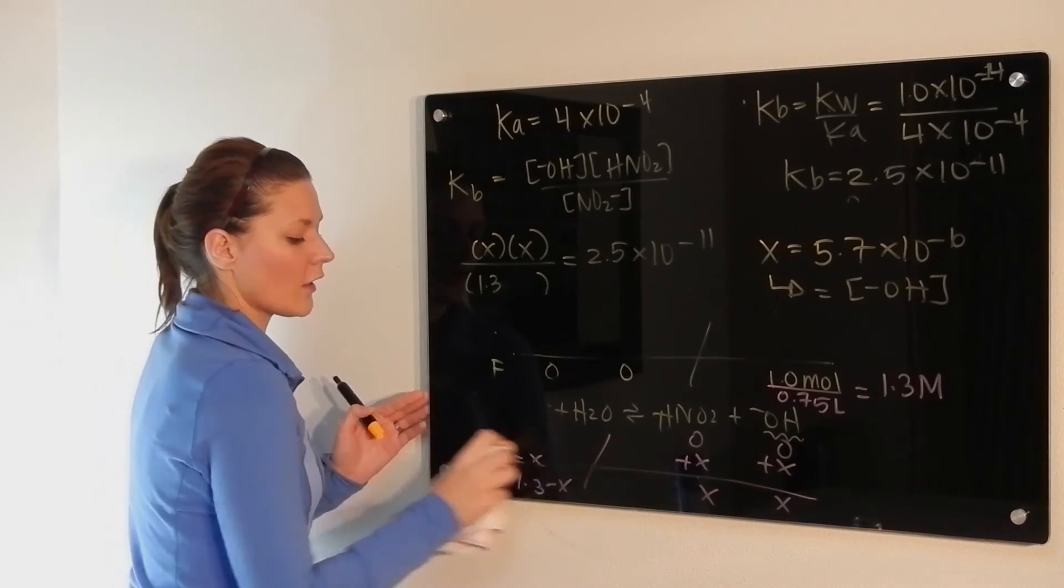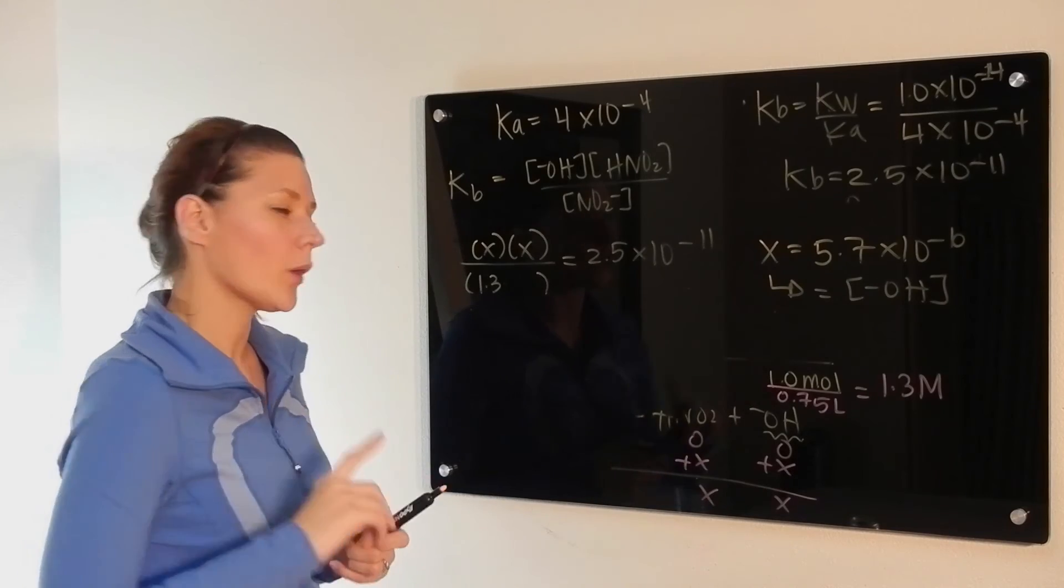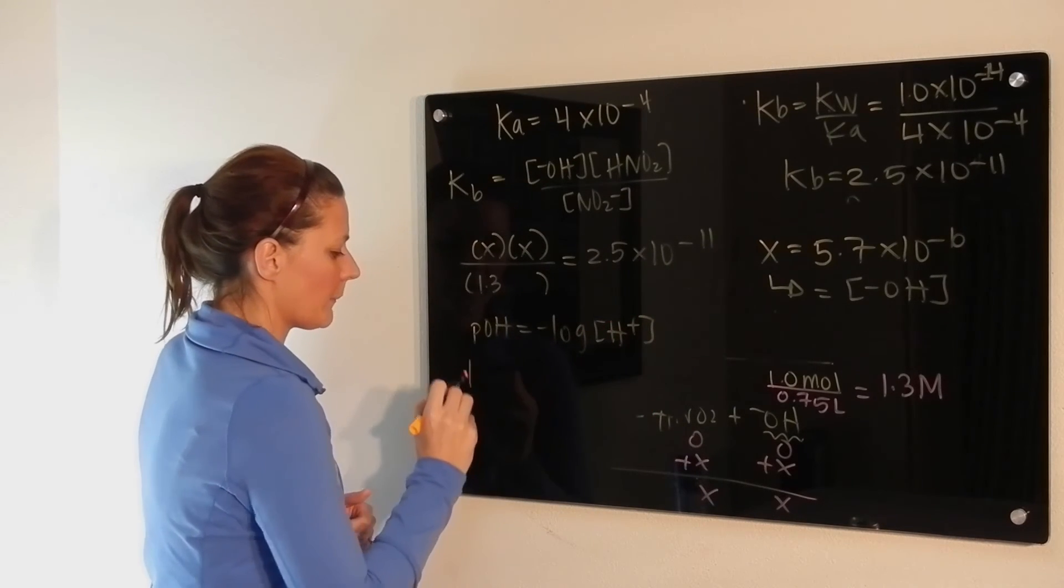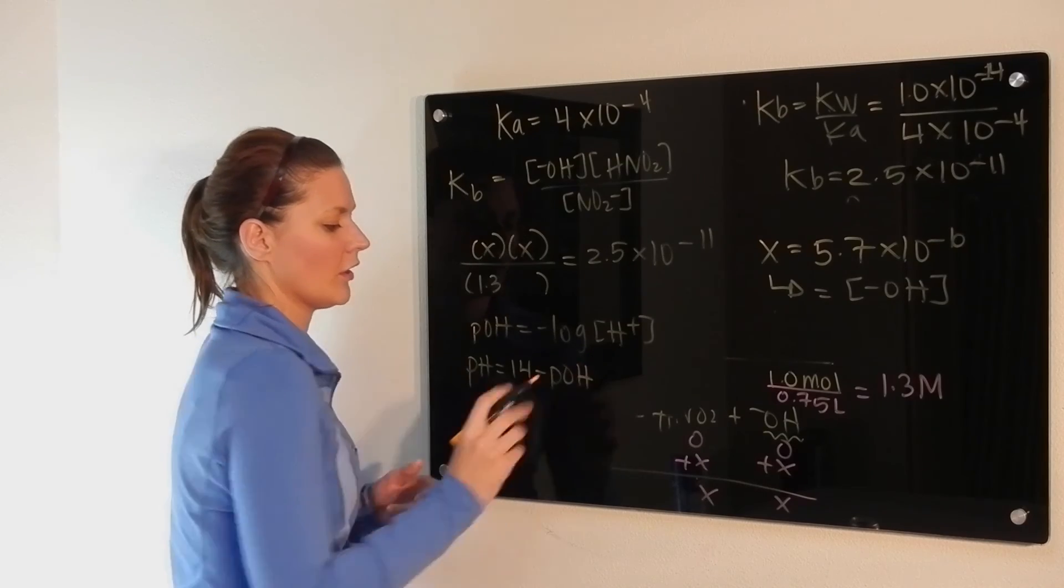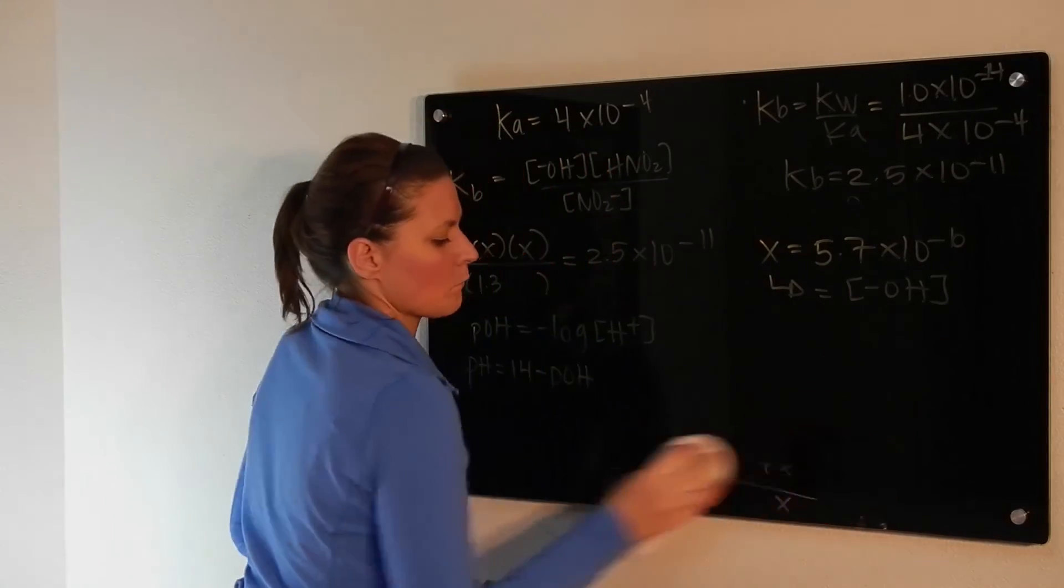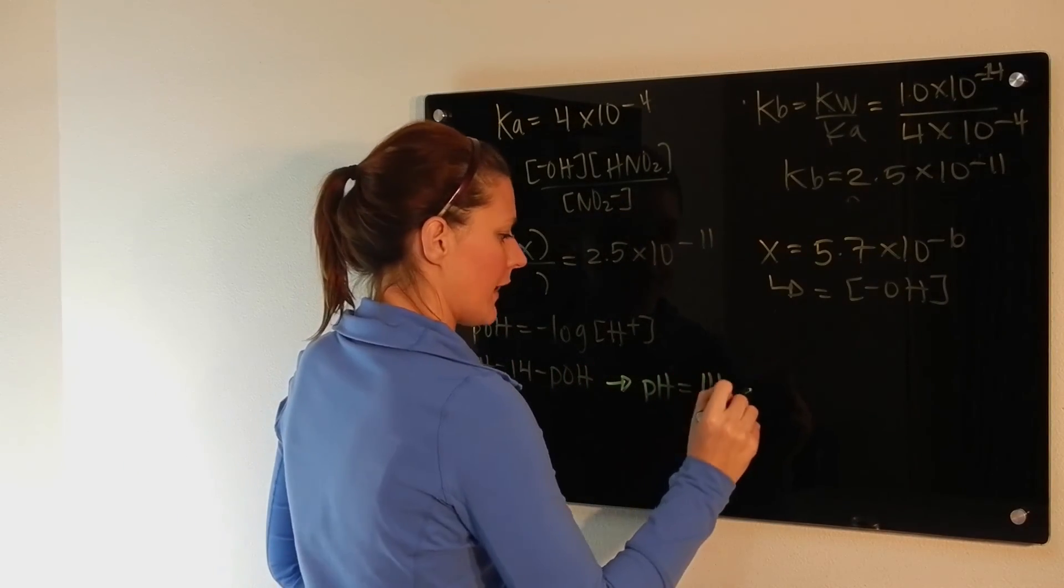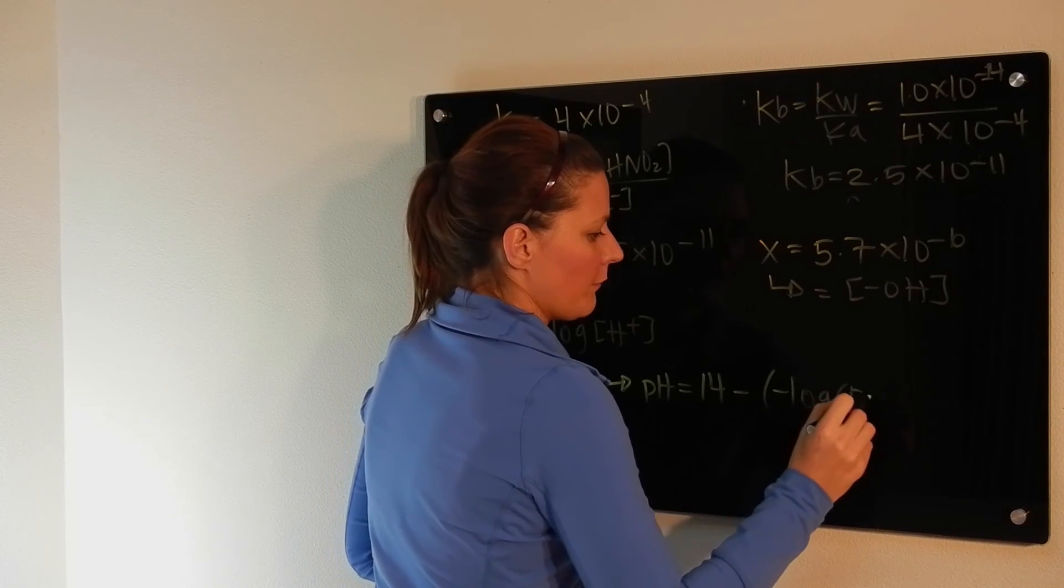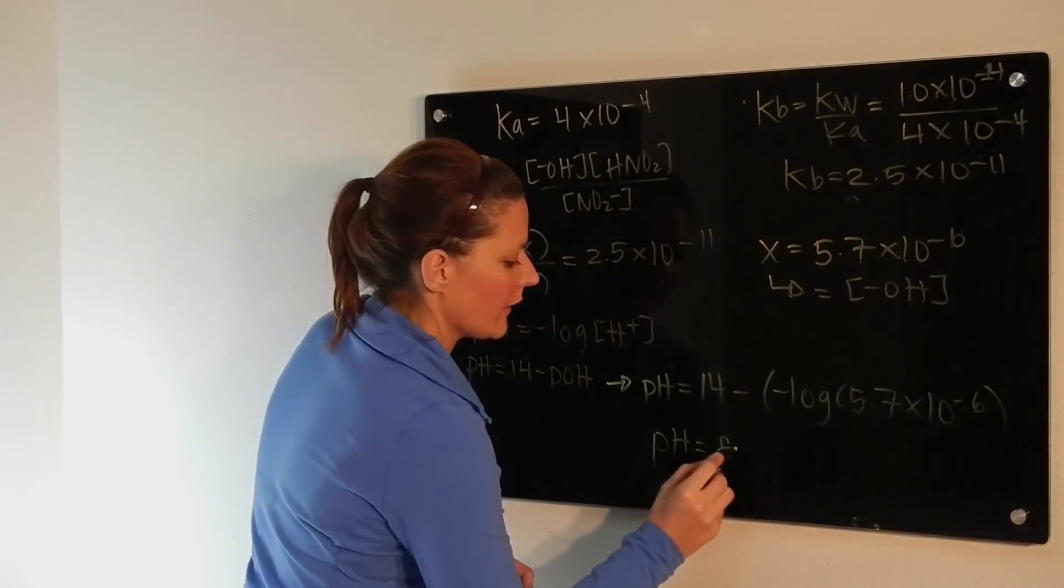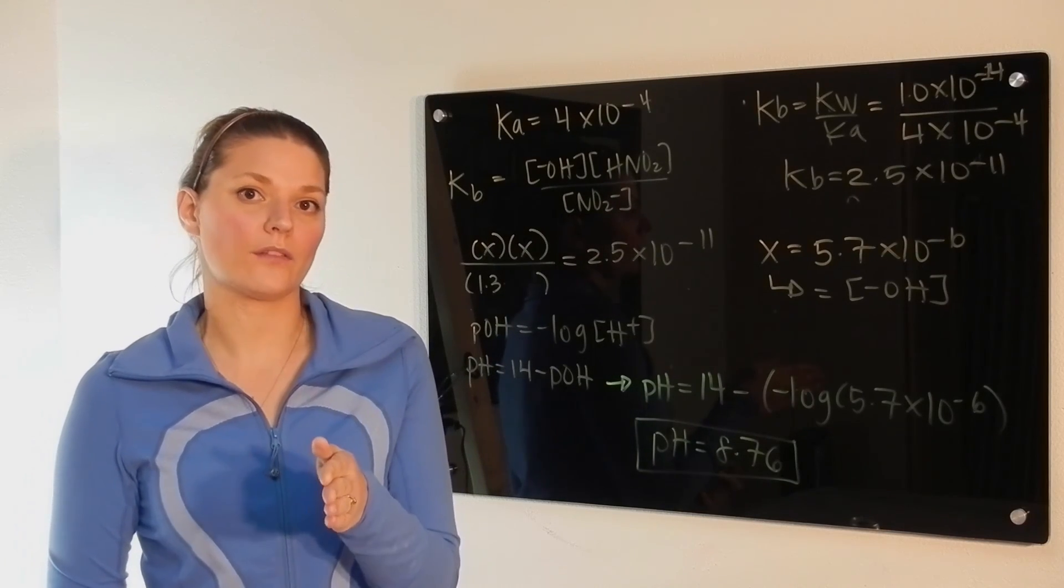Remember that this value here is equal to the concentration of hydroxide. So what we're going to do now then is solve for our pOH, and then we're going to solve for our pH. Okay? So remember the two equations. pOH is equal to the negative log of your concentration of hydroxide, and pH is equal to 14 minus your pOH. So we're just going to plug everything in and solve for our answer. So we have pH is equal to 14 minus the negative log of 5.7 times 10 minus 6. Plug it into your calculator and you get a value of 8.76 as your pH. And that is how you solve for being at the equivalence point in a titration.